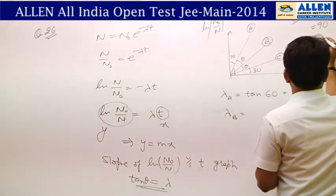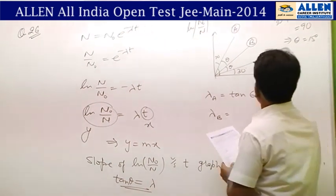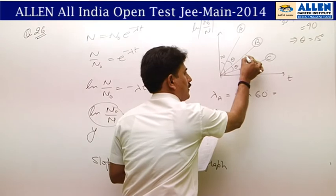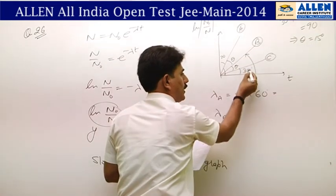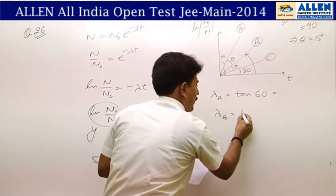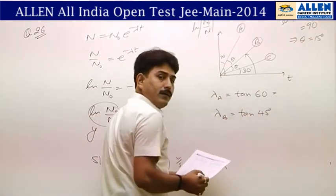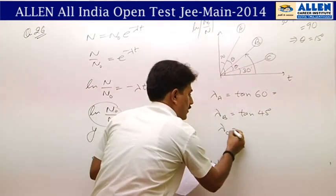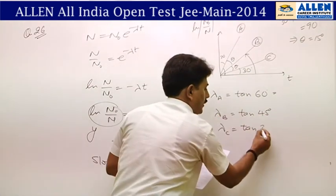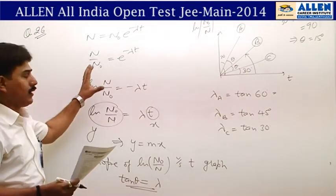So the total angle for decay B is 30° + 15° = 45°, meaning λ_B = tan 45°. For decay C the angle is 30°, so λ_C = tan 30°.